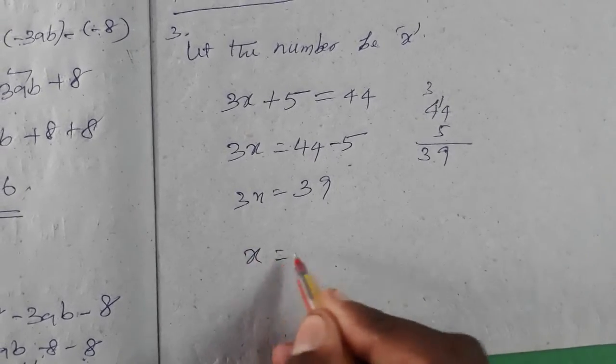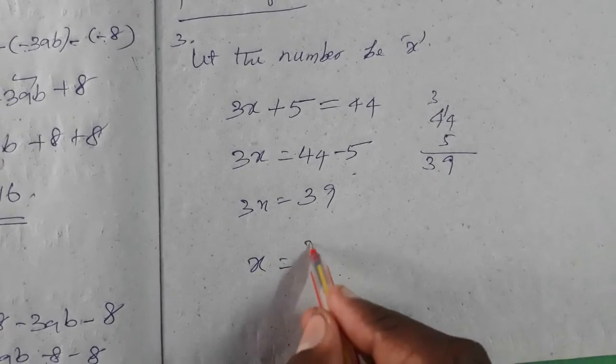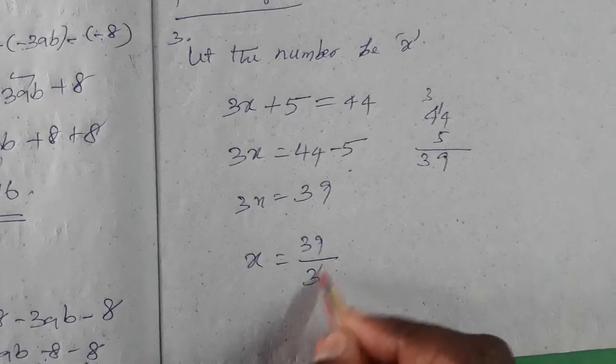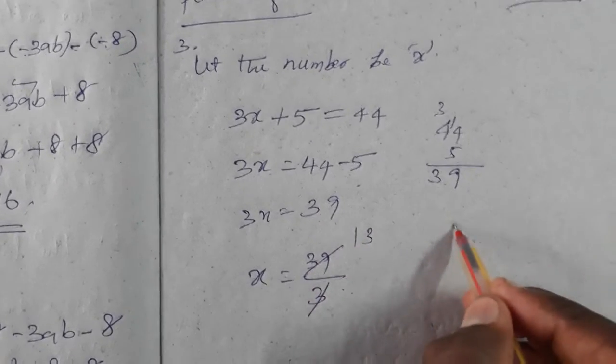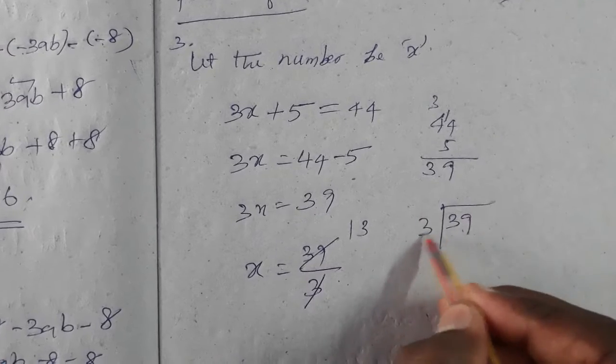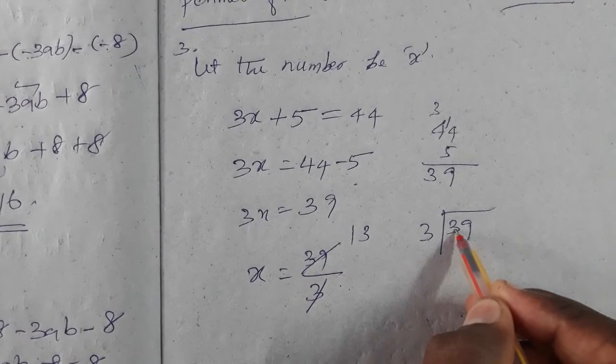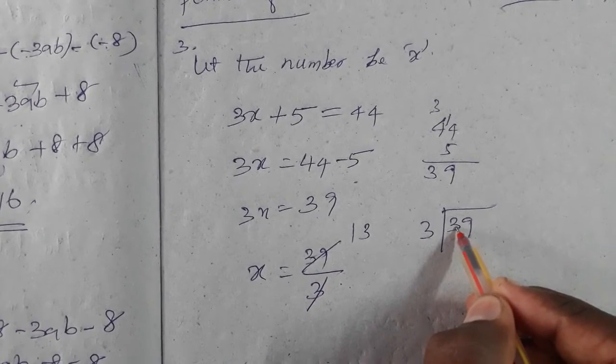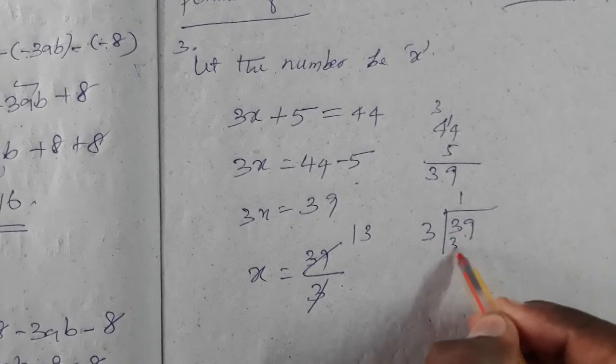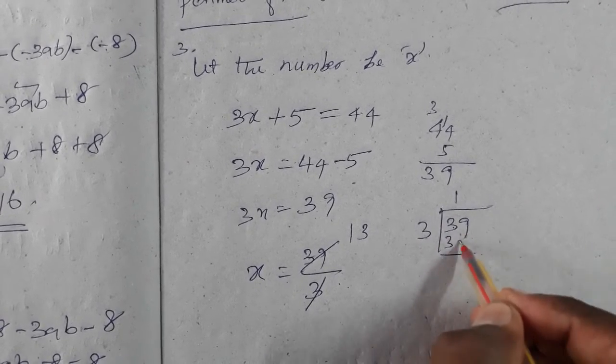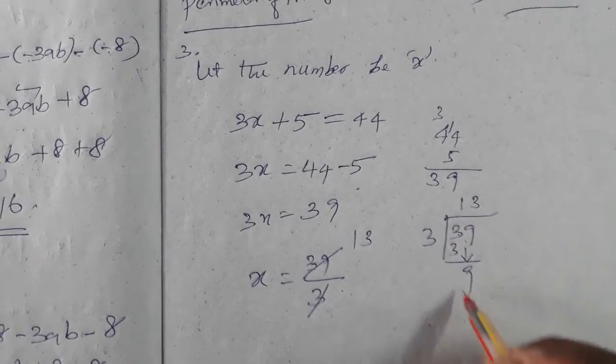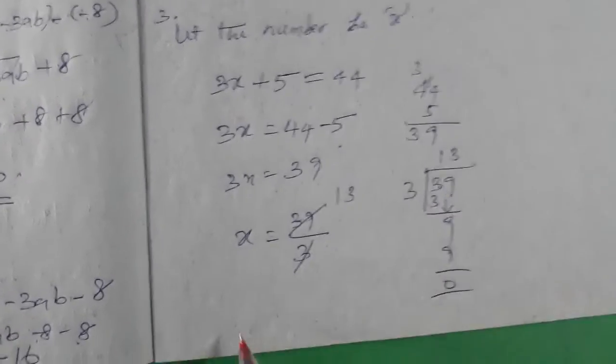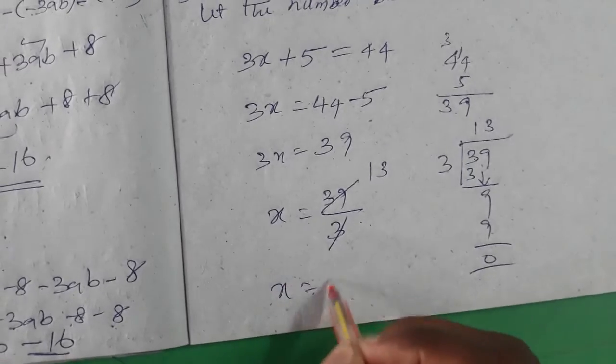Now to find x, 3 goes to the right-hand side as division. 39 divided by 3. Taking the first digit, 3 divides into 3 one time, that's 3. Bring down the 9. 3 divides into 9 three times, that's 9. Therefore, x equals 13.